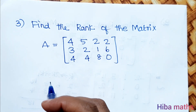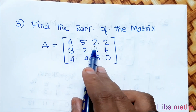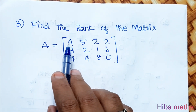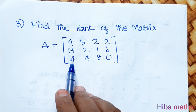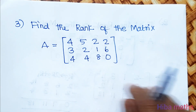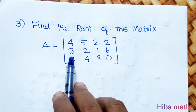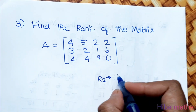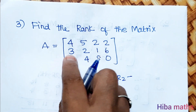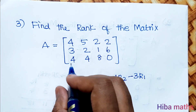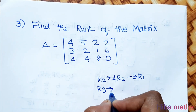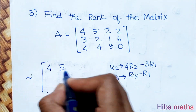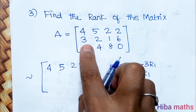Third question: find the rank of the matrix A equal to [4, 5, 2, 2; 3, 2, 1, 6; 4, 4, 8, 0]. We set up row echelon form. The first non-zero rows have numbers present. R1 stays, R2 changes using 4×R2 minus 3×R1, and R3 changes using R3 minus R1.